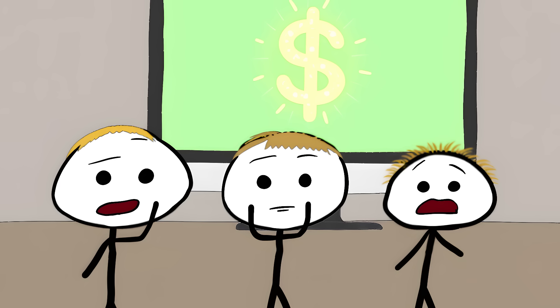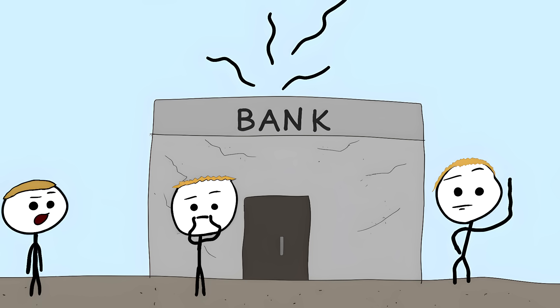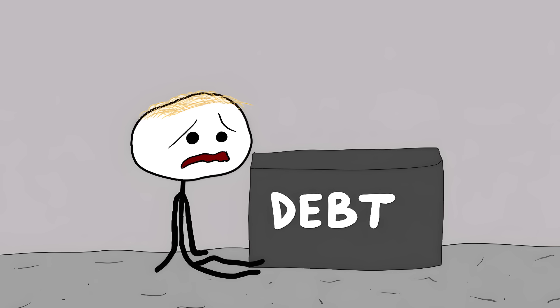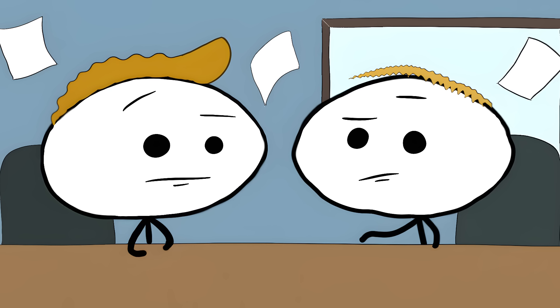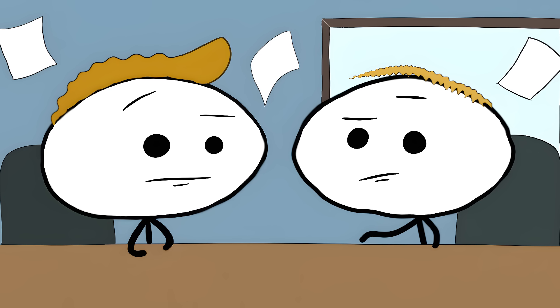The entire system runs on everyone believing it works. If everyone tried to withdraw their money at once, the whole thing would collapse because most of that money only exists as debt. Most people will confidently explain banking to you like they're financial experts. But the truth is, even economists argue about whether this system makes any sense. That's all for today. I'll be making similar videos in the future. Subscribe to see them.